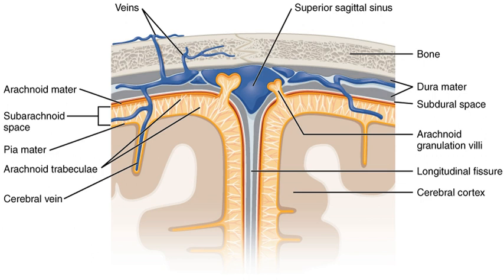The dura mater is a sac that envelops the arachnoid mater and surrounds and supports the large dural sinuses carrying blood from the brain toward the heart. The dura has four areas of infolding. The falx cerebri, the largest, is sickle-shaped and separates the cerebral hemispheres. It starts from the frontal crest of the frontal bone and the crista galli, running to the internal occipital protuberance.